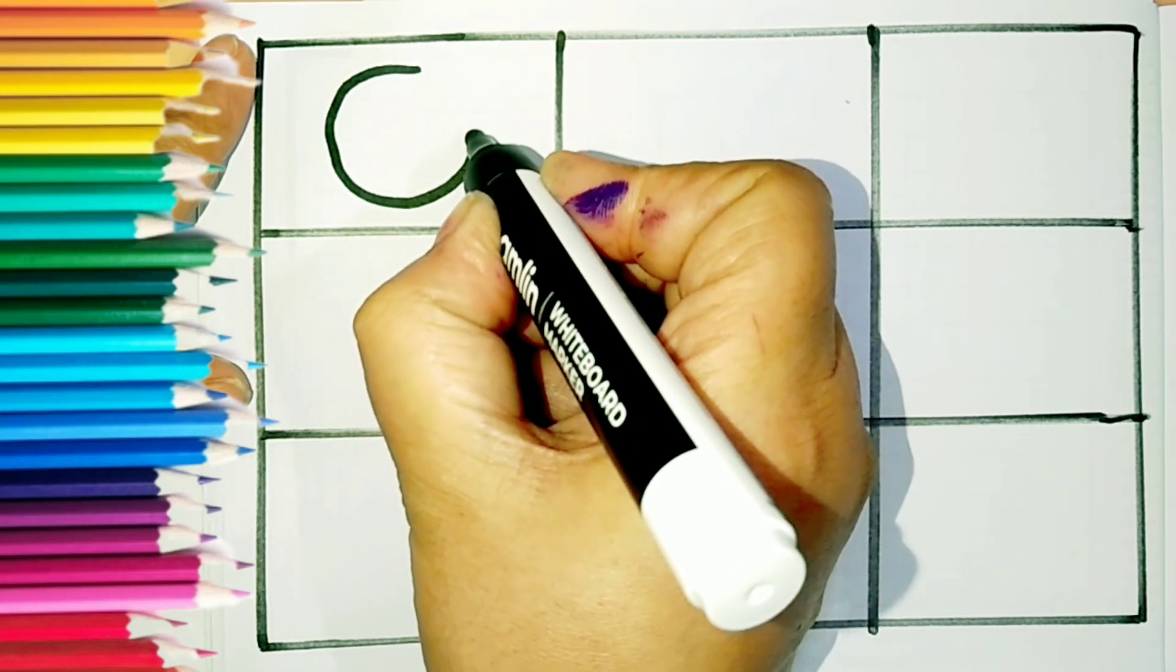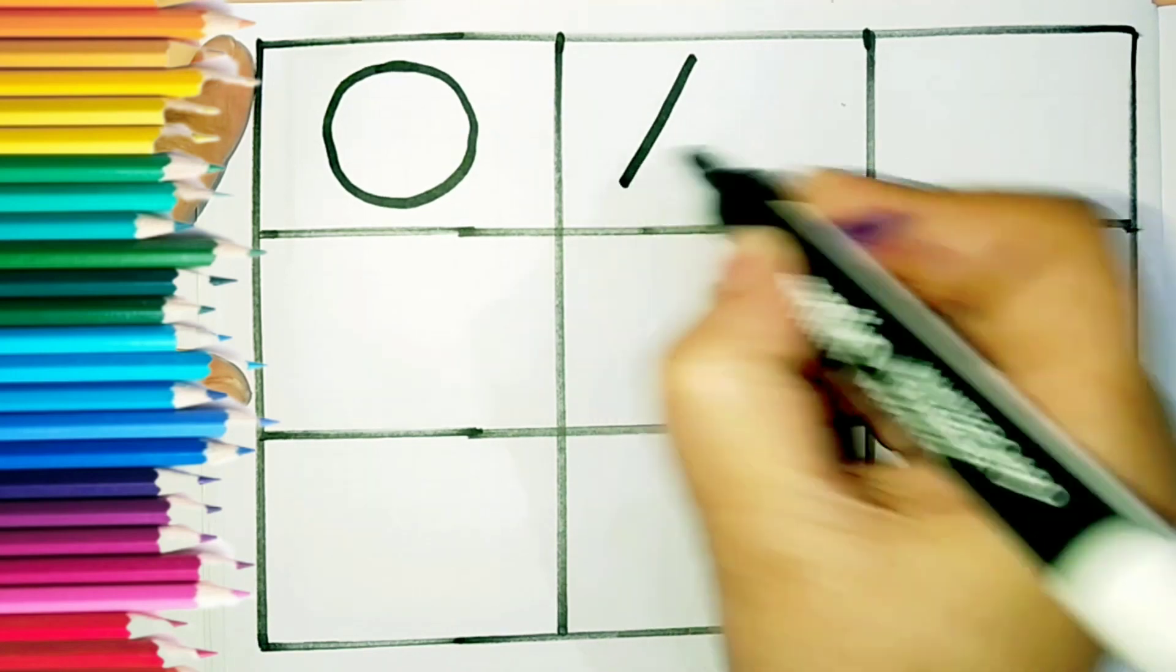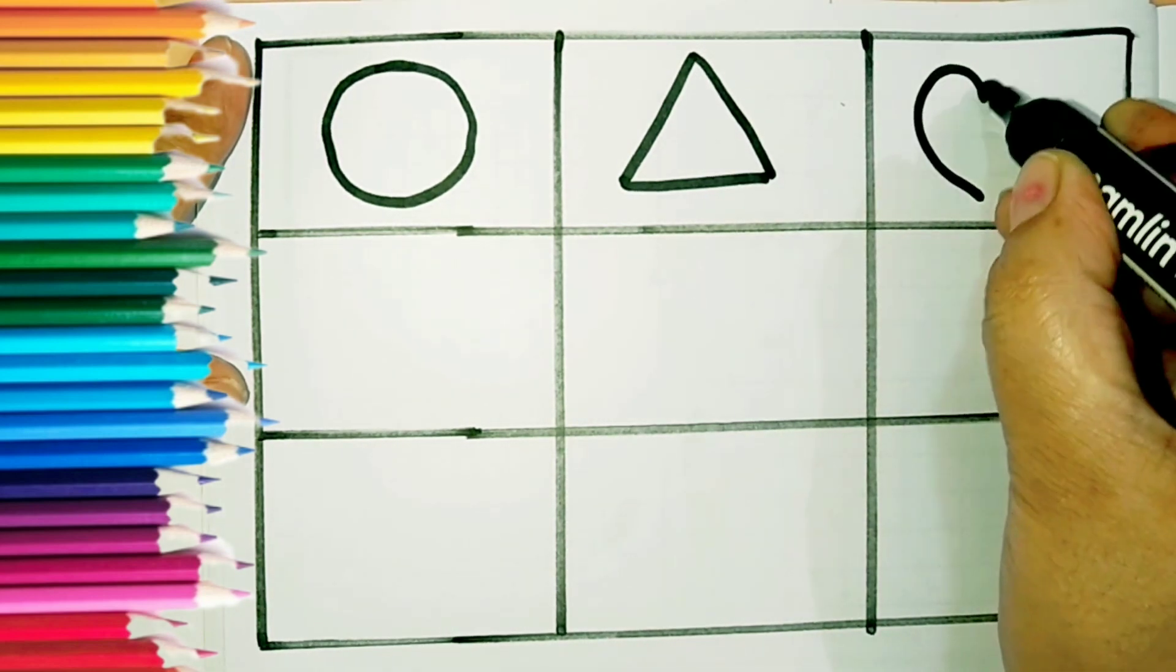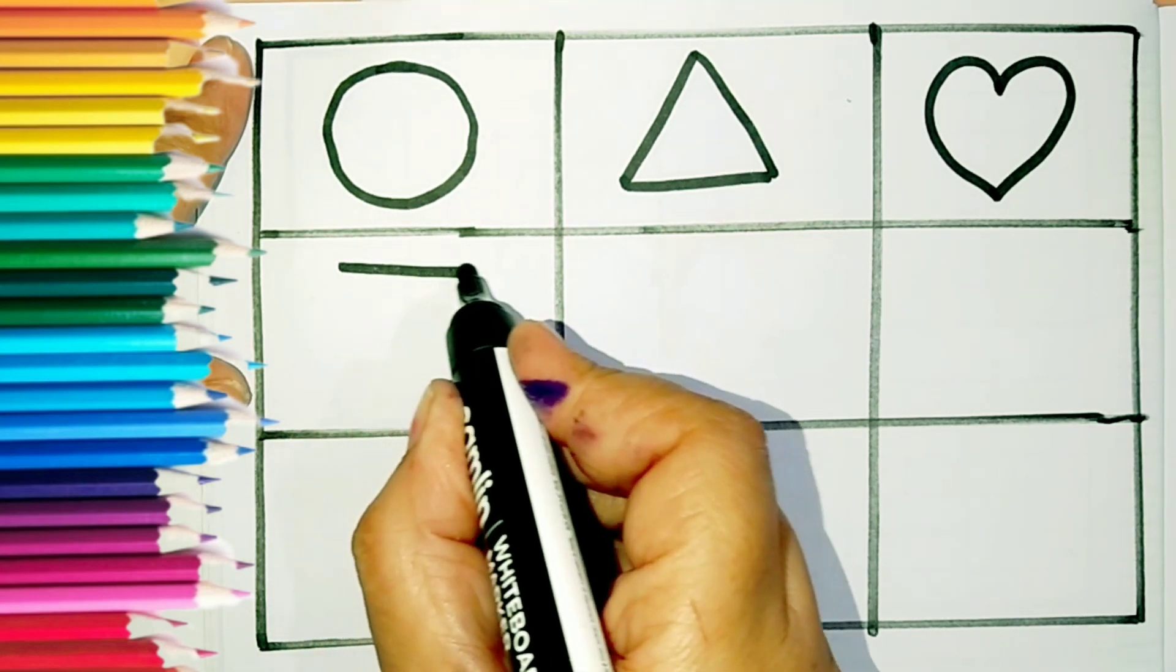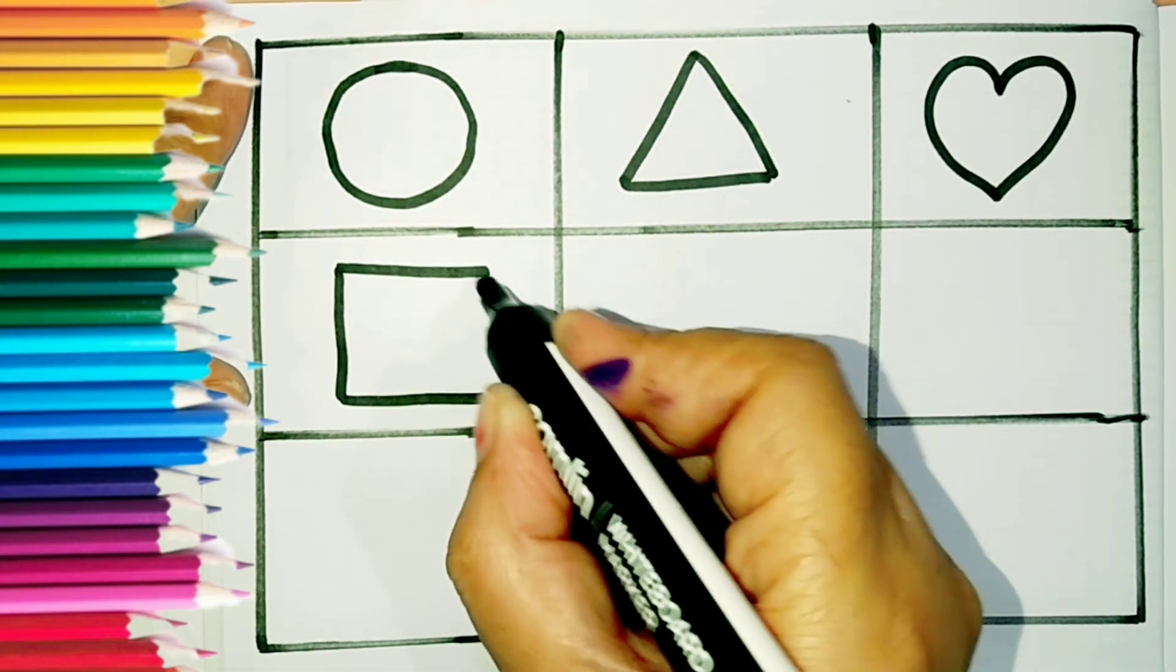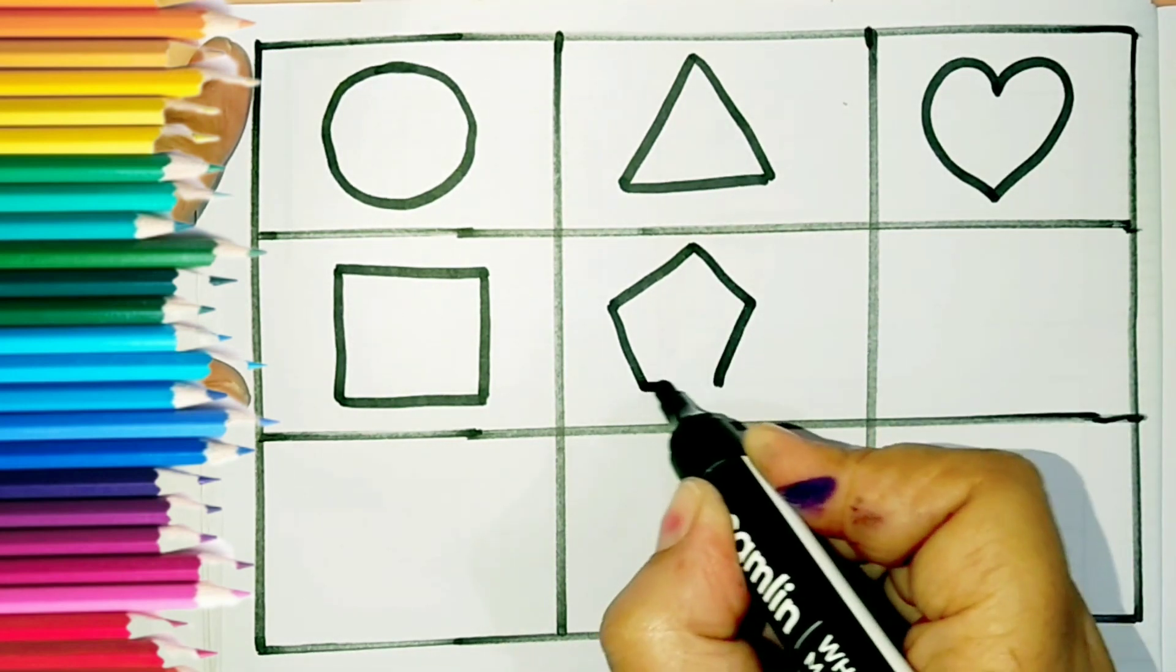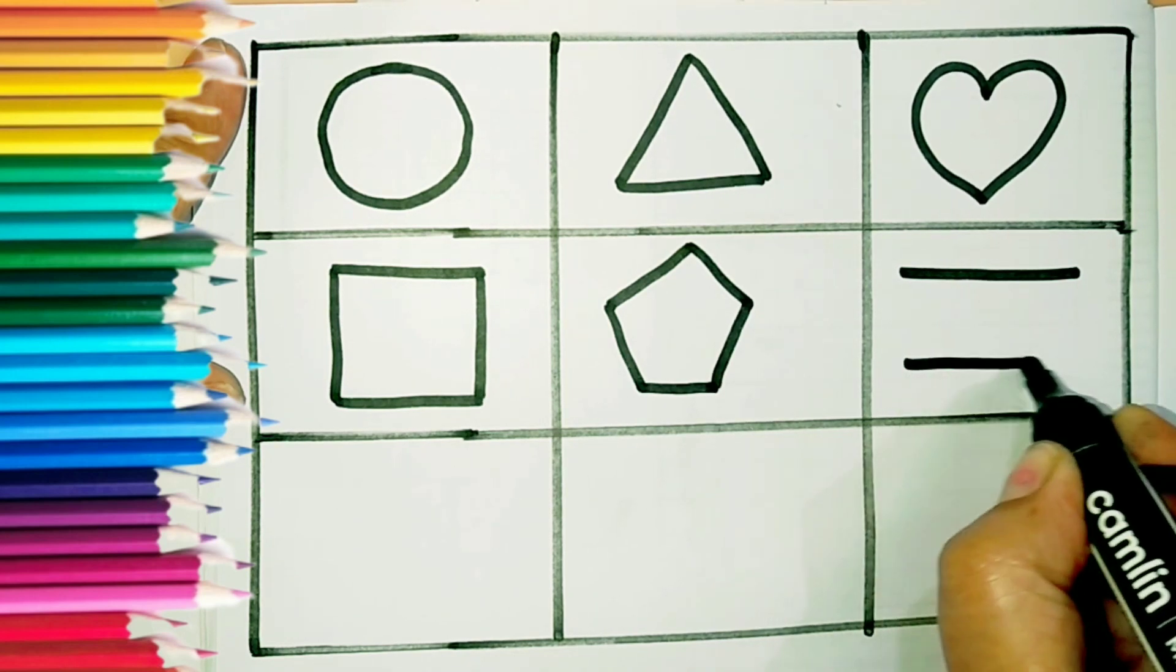Circle, this is a circle. Triangle, heart, square, pentagon, rectangle.